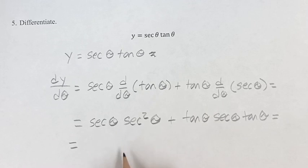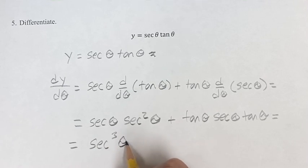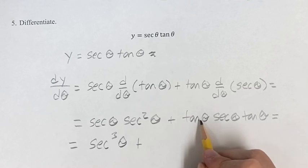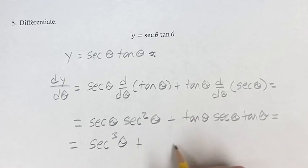So this is equal to secant cubed theta, secant times secant squared, plus tangent squared theta, tangent times tangent, times secant theta.